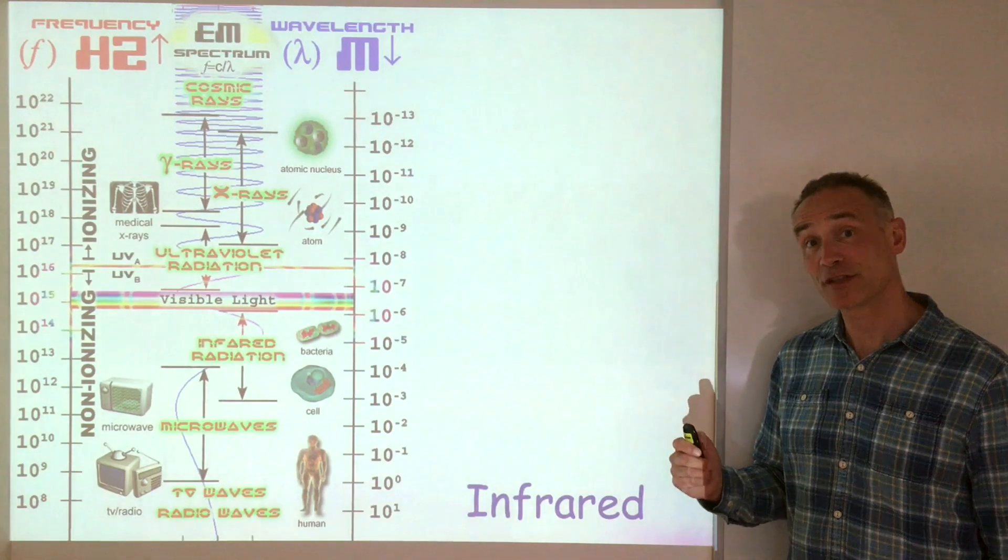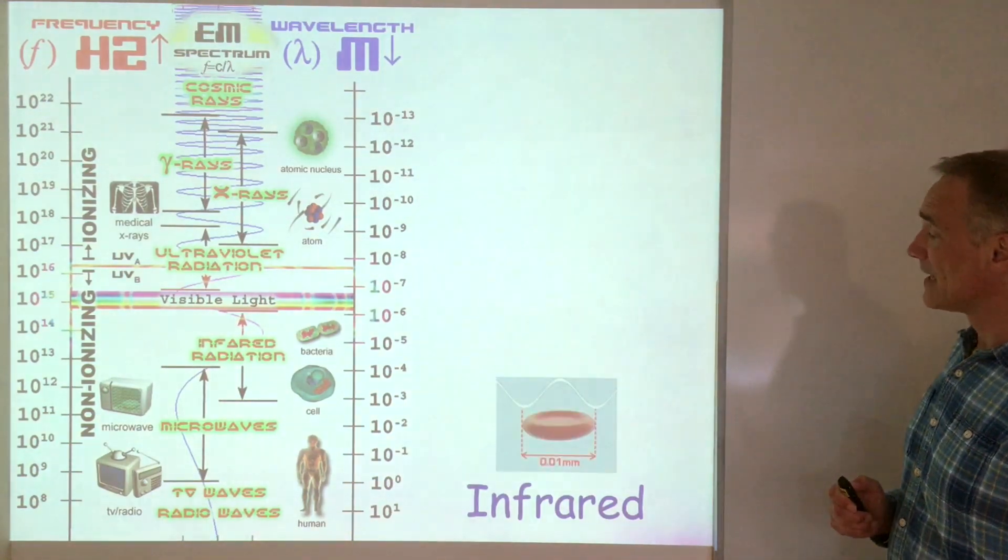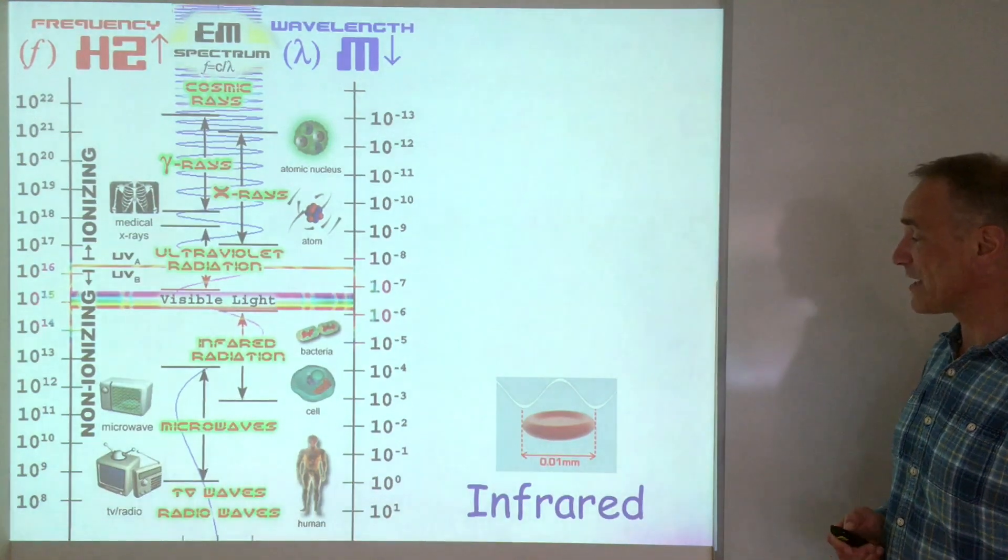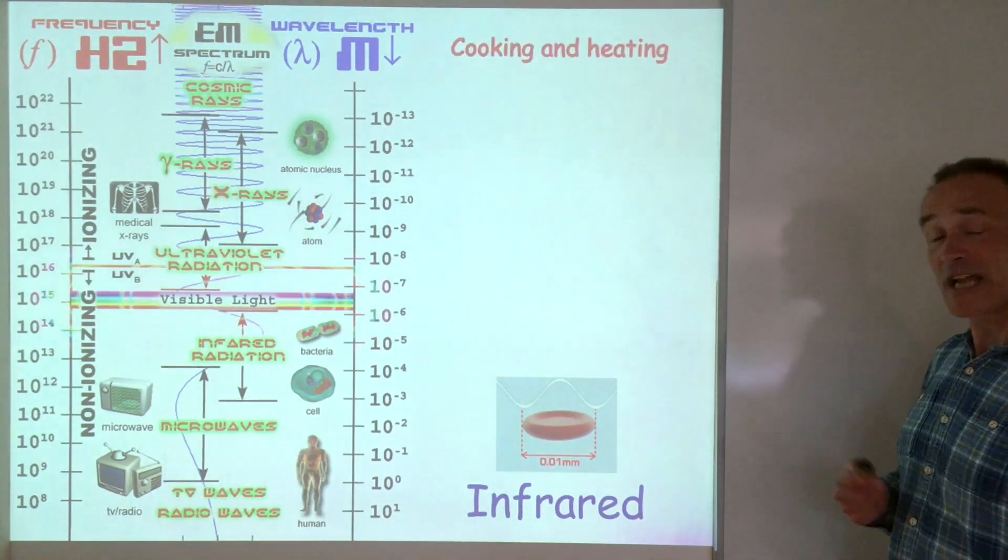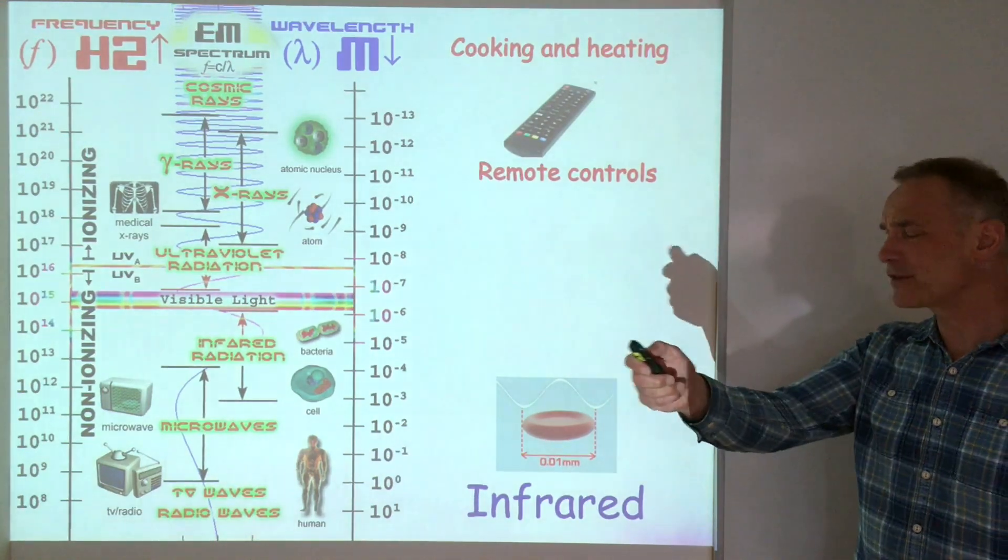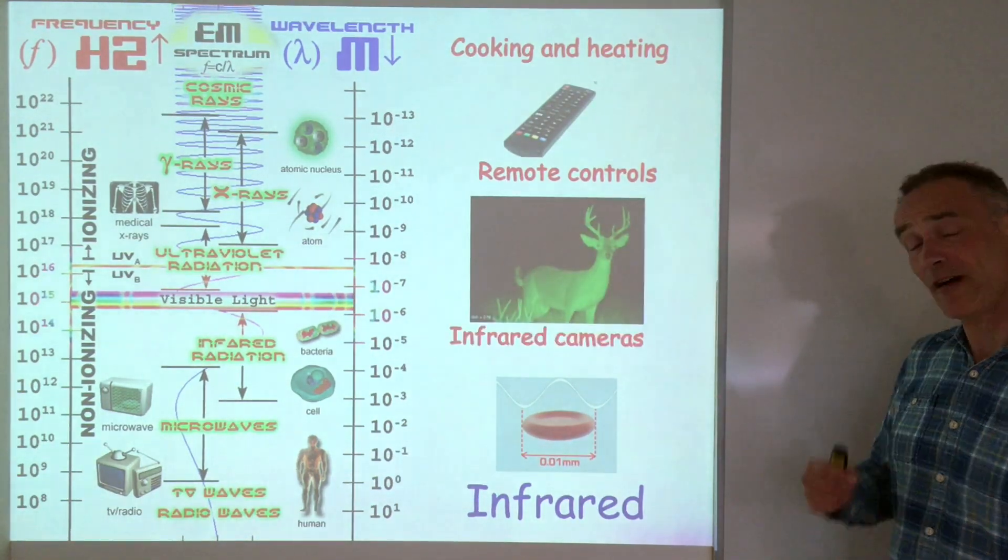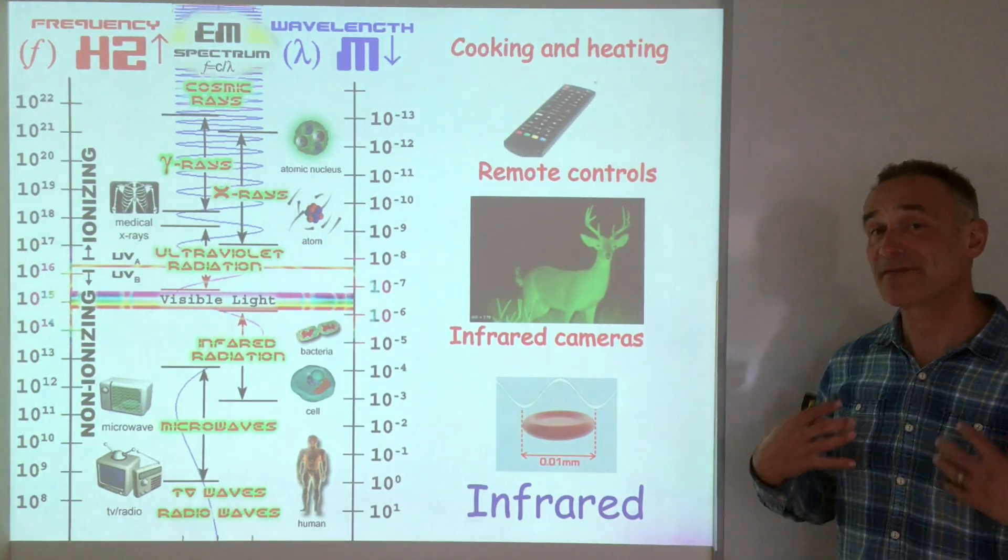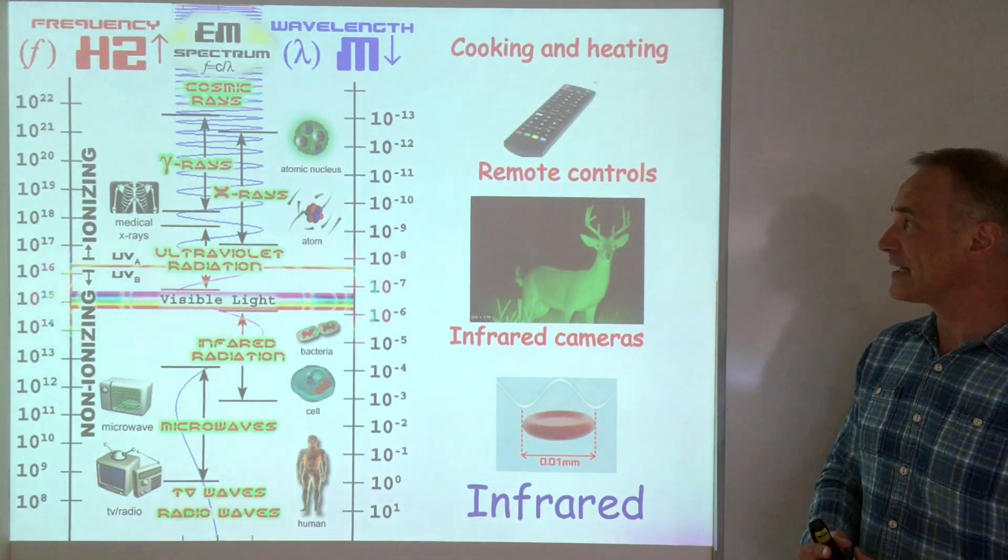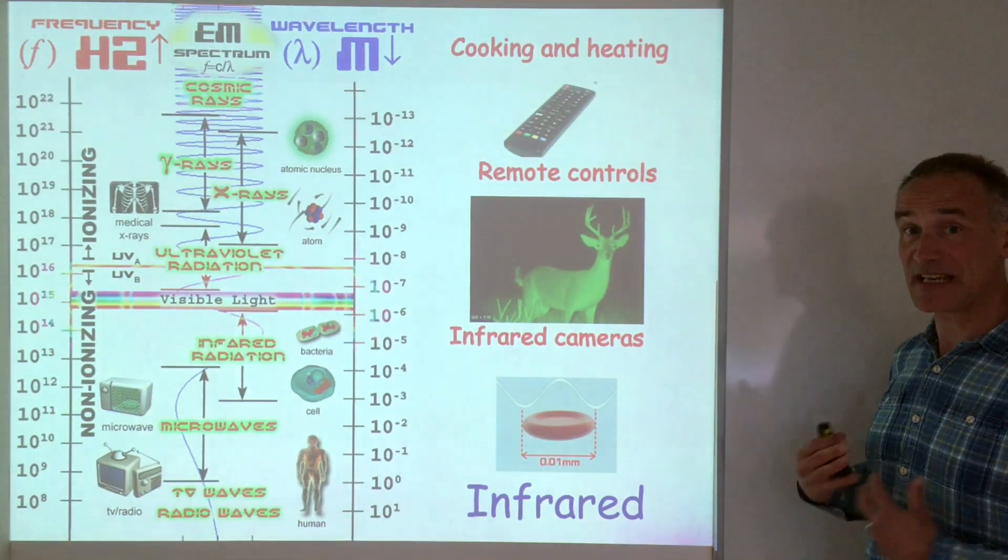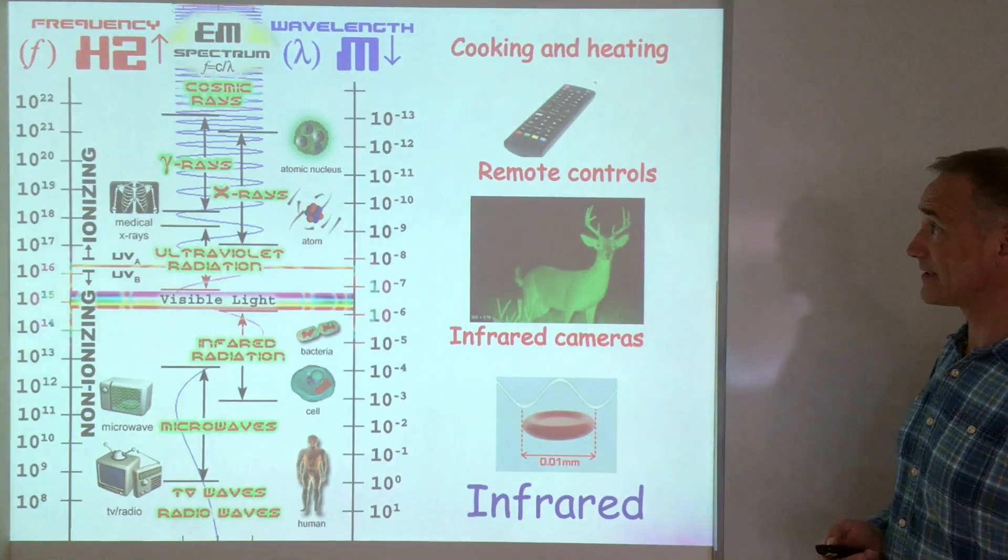Let's now have a look at infrared. Infrared has a wavelength of about the size of our red blood cell and we know we use it for cooking and heating. We also use it for remote controls. And finally, we also use it for infrared cameras because every object gives out infrared radiation. So instead of the camera being sensitive to light, it's sensitive to infrared so can see at night time.